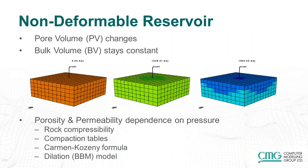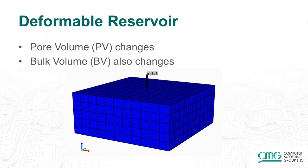Conventionally, reservoir engineers have been using non-deformable reservoirs. In non-deformable reservoirs, the pore volume can still change, but the bulk volume stays constant, meaning grid block shapes stay constant. Even in these models, we always use a basic geomechanical feature without realizing it — rock compressibility — which changes the pore volume of the rock based on pressure. Sometimes we also use compaction tables, sometimes the Karman-Kozeny formula, and in thermal simulations, dilation models. All these different models mimic geomechanical features to some extent, but real geomechanical modeling incorporates the feature of deformable reservoir.